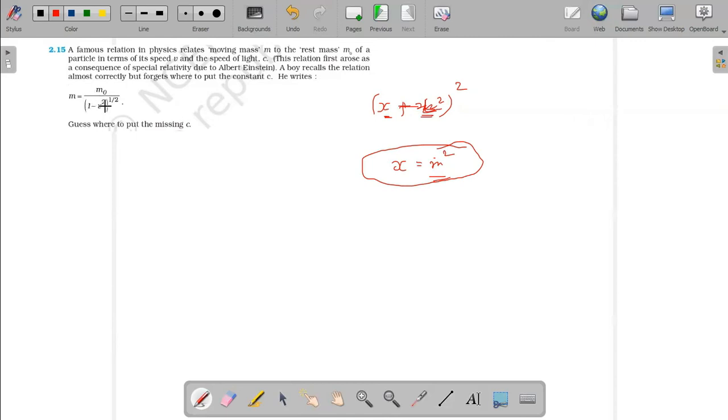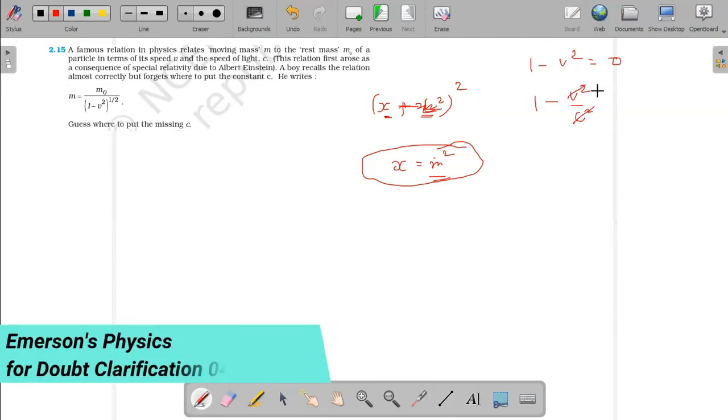Here, one minus v squared. Then two terms must have the same unit. That means this one is dimensionless, a constant. Then this unit is equal to one. If you want to check v squared, this unit must equal one, so v squared by c squared must be dimensionless.